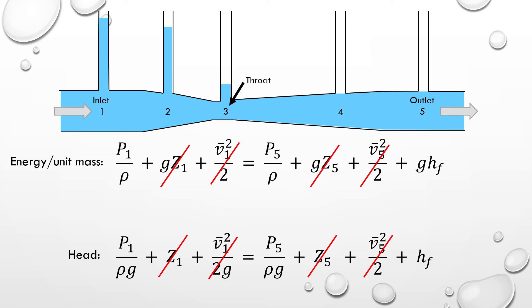Again, we have no change in height, which removes the potential energy terms. Because the fluid travels through a longer distance, frictional losses are more substantial,